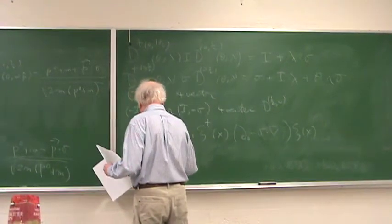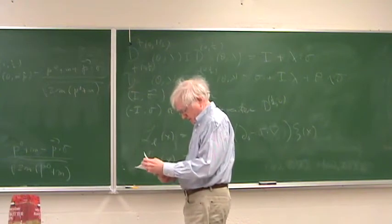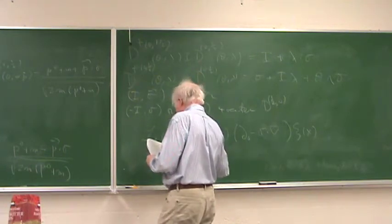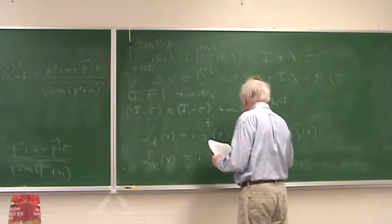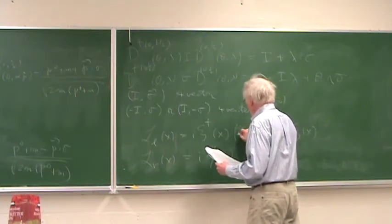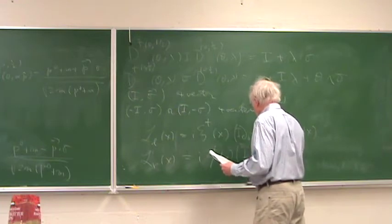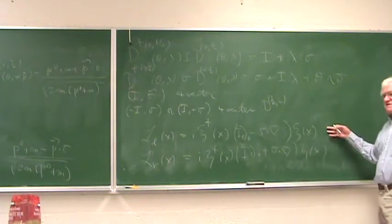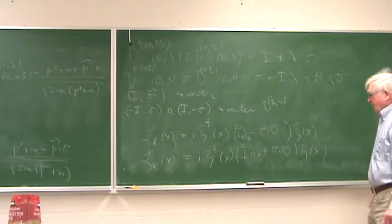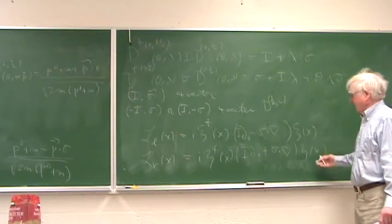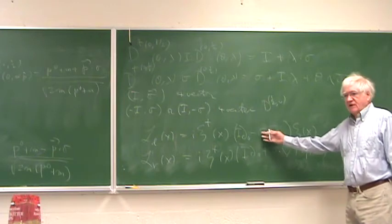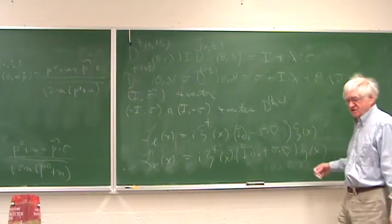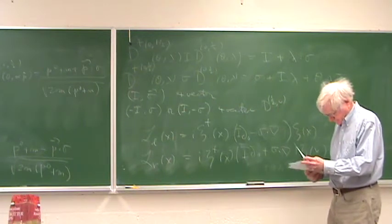The right-handed one: I wrote it as i zeta-dagger of x times (d0 plus sigma dot grad) zeta. So this describes a massless left-handed field and a massless right-handed field. These are two-component field operators — c has components c1, c2 — because these are the Pauli matrices, which are two-by-two. This is the two-by-two identity, two-by-two Pauli matrices; zeta has two components.